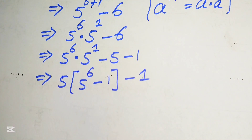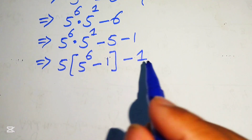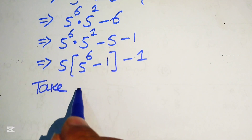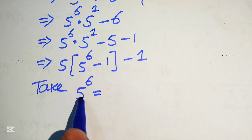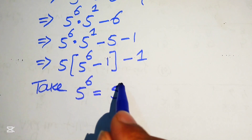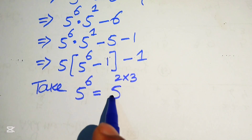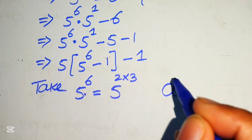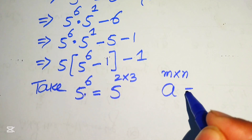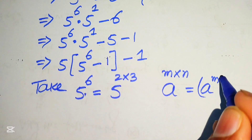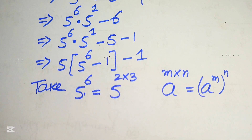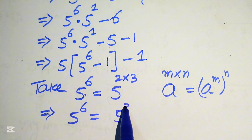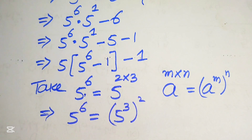Our next target is to find the value of 5 to the power of 6. To do so, we apply the exponent law: a to the power of m times n equals a to the power of m to the power of n. According to this rule, we write 5 to the power of 6 as 5 to the power of 3, whole squared.